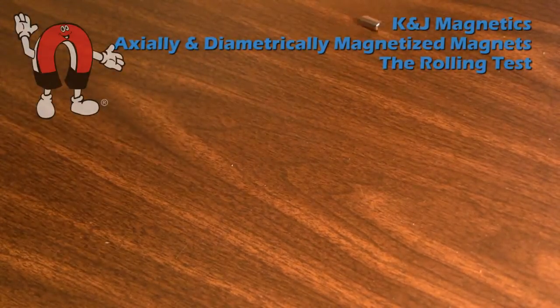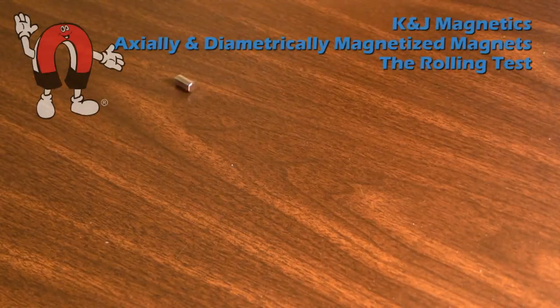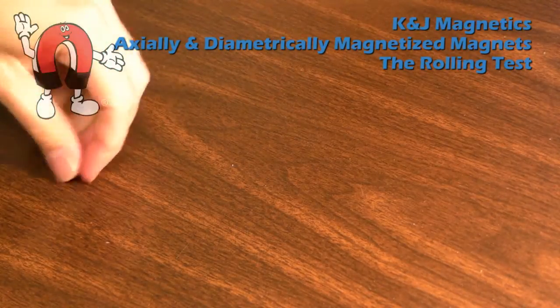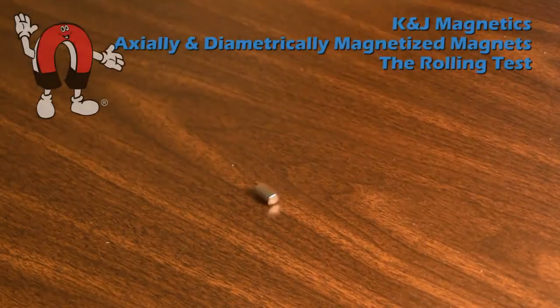This axially magnetized cylinder will roll freely if you roll it across a wooden desk. It tends to roll pretty evenly.